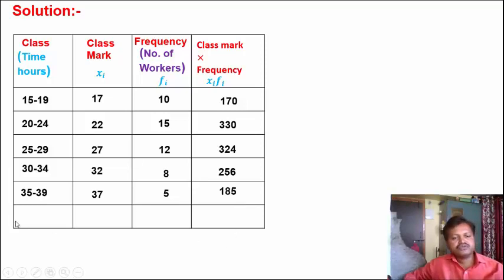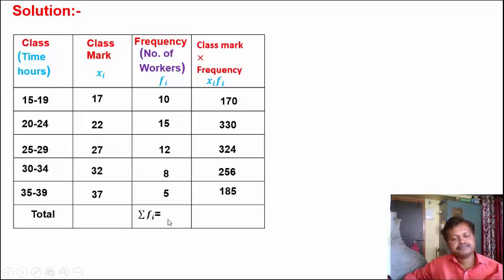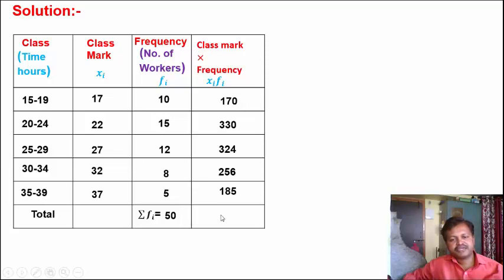In the last row, write the totals of Fi and Xi Fi. Sigma Fi = 10 + 15 + 12 + 8 + 5 = 50. And Sigma Xi Fi = add all the Xi Fi values, you get 1265.